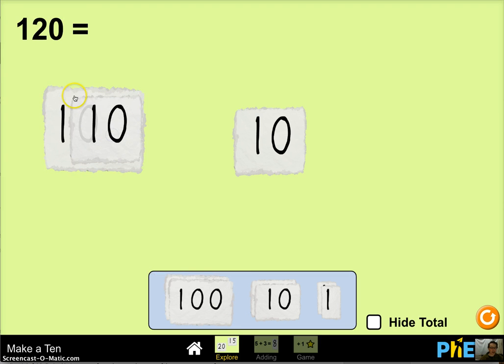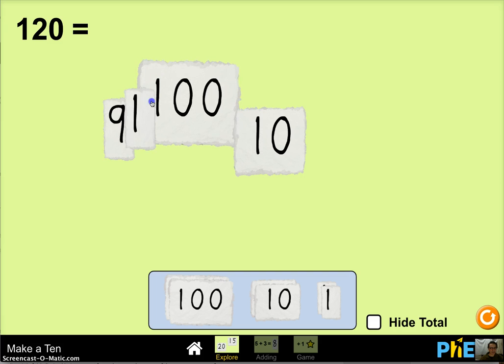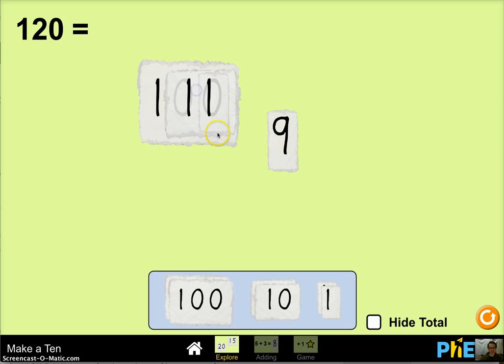Hundreds. I really like this sort of shadowed overlay where you can see the 100 underneath and the 10, so you get that sense of place value.